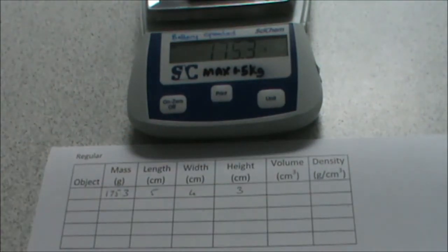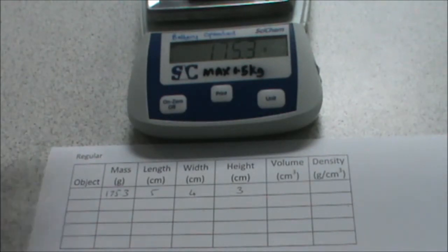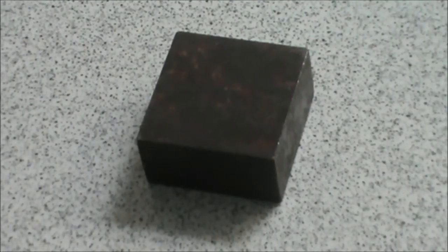A zero error is an error whereby the top pan balance would already be displaying a value in grams, even though there is no object on the balance. We then repeat these readings for our different objects.